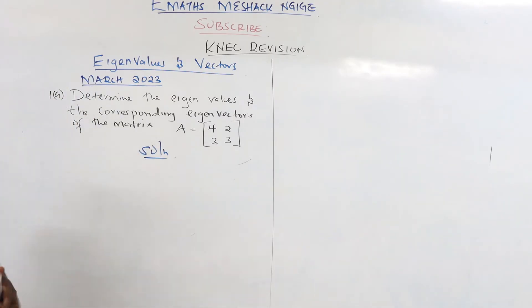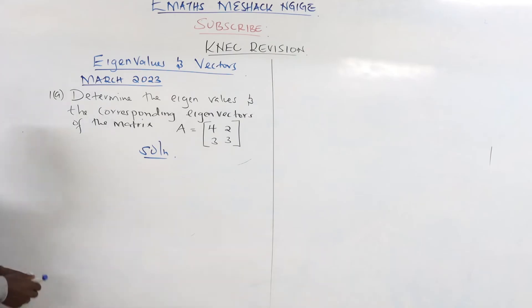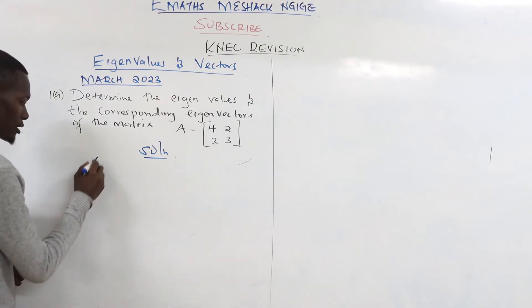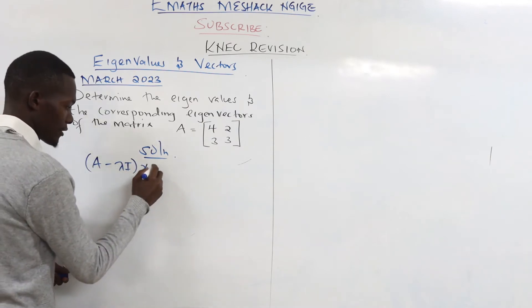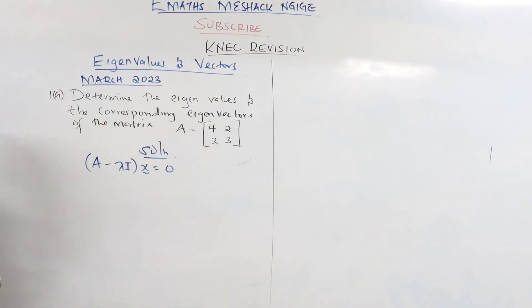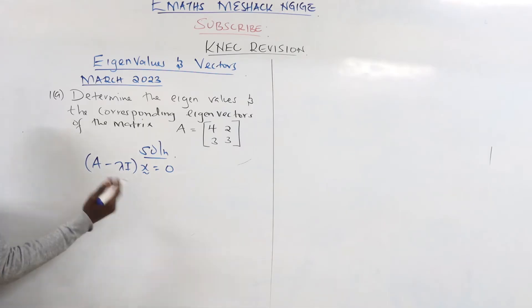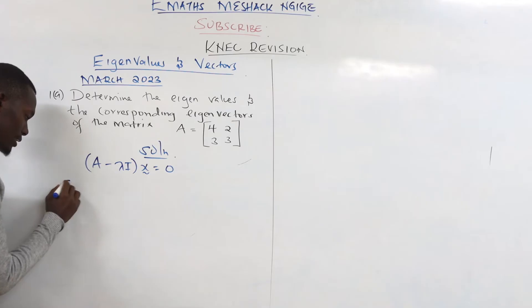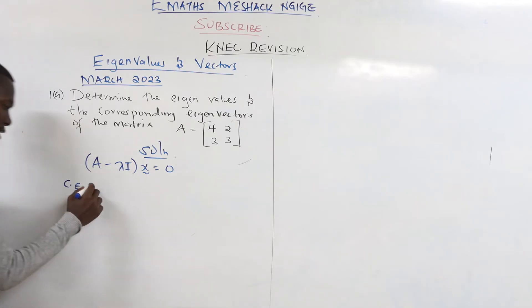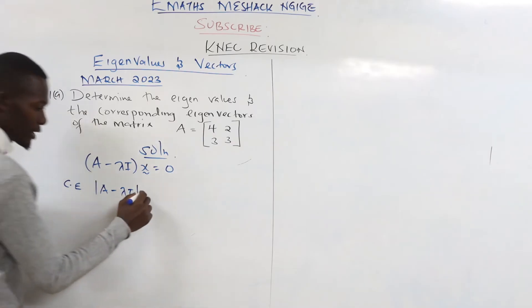When solving the eigenvalues and eigenvectors, the first step is to write down the equation. We have the equation given by (A minus lambda I) times the vector equals zero. This is called the characteristic equation. So the CE is given by the determinant of (A minus lambda I) equals zero.